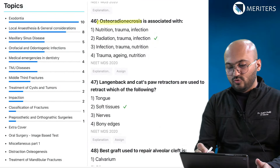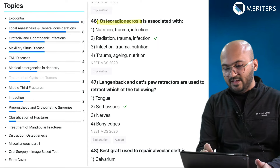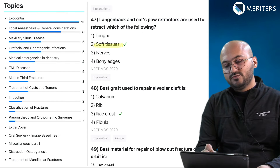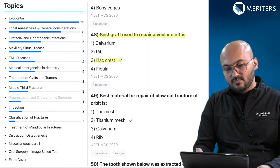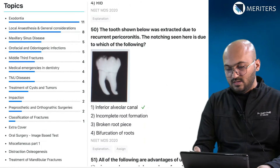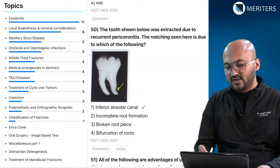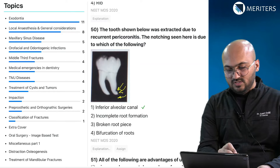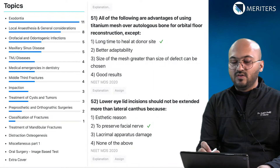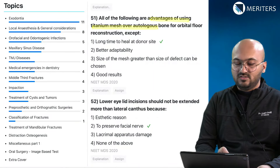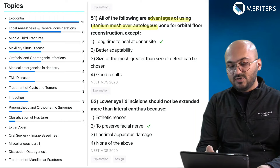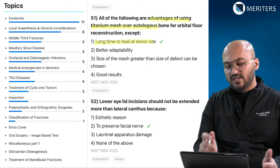The next question is on osteoradionecrosis. Langenbeck and Kazanjian retractors are used for soft tissue retraction. The graft material of choice for repairing an alveolar cleft is iliac crest, and for blowout fractures it is titanium mesh — that goes to middle third fractures. A tooth removed due to recurrent pericoronitis with notching at the root — this is due to the inferior alveolar canal, and that falls under impacted molar. The advantage of using titanium mesh over autologous bone for orbital floor reconstruction is the long healing time of autologous bone — a parallel question to the previous one.